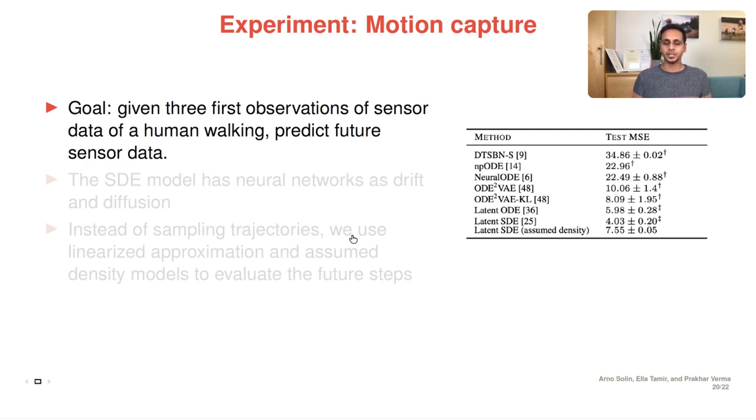Now, moving to motion capture dataset. The goal for the motion capture dataset is we are given first three observations and then we want to predict the future sensor data.